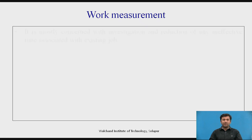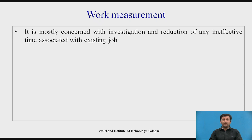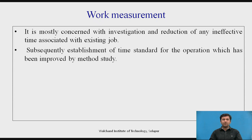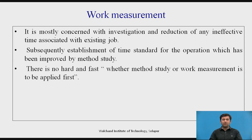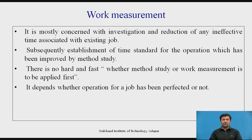Work measurement is mostly concerned with investigation and reduction of any ineffective time associated with an existing job. Subsequently, it involves establishment of time standards for operations which have been improved by method study. There is no hard and fast rule whether method study or work measurement is to be applied. If the process has been stable in an organization, we can directly apply work measurement techniques to reduce time. Or if we have to improve the process, we first improve it and then apply work measurement, which finally leads to higher productivity. If the job operation is perfected, work measurement can be immediately applied. If it is not, the process must first be stabilized and then work measurement or time reduction activity is carried out.